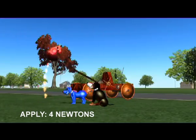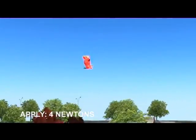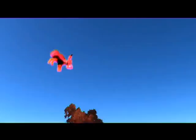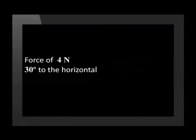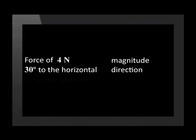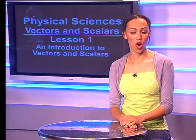If the gamer is told to apply a force of 4 newtons to the dog in the game, will that be enough information to hit the target? No — he needs to know the direction too. For example, he could apply a force of 4 newtons at 30 degrees to the horizontal. This measurement has a magnitude and unit as well as direction, and is therefore a vector quantity. All physical quantities, whether vector or scalar, must have a unit such as newtons or meters.